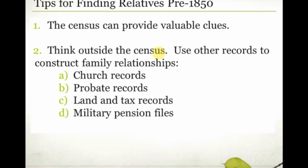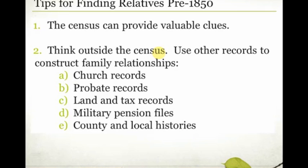Military pension files are also a great record set for tracing pre-1850 relatives. There was the Revolutionary War and the War of 1812, plus several other conflicts before 1850 where men born in the mid to late 1700s would have fought and been awarded a pension. Those pension files often list the name of the soldier's wife and when and where they were married, and the names of underage children when they applied — possibly including when and where those children were born. This lets you construct families using records beyond the census.